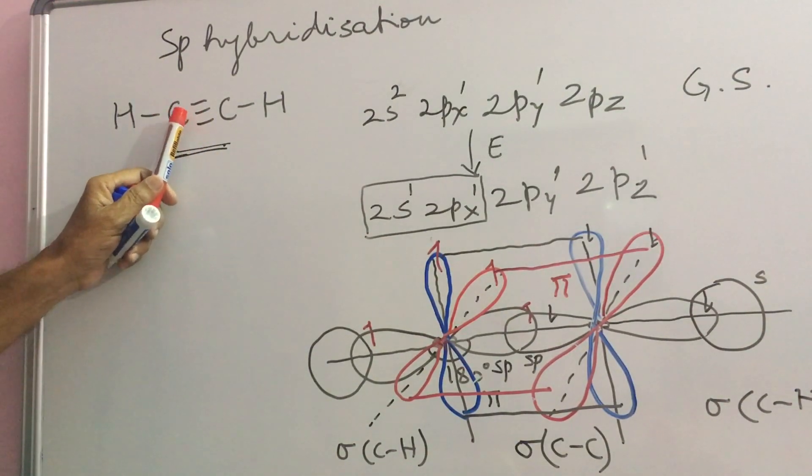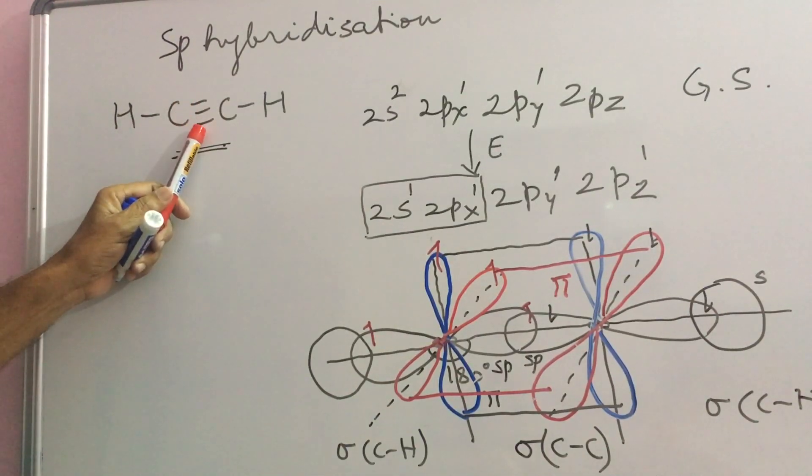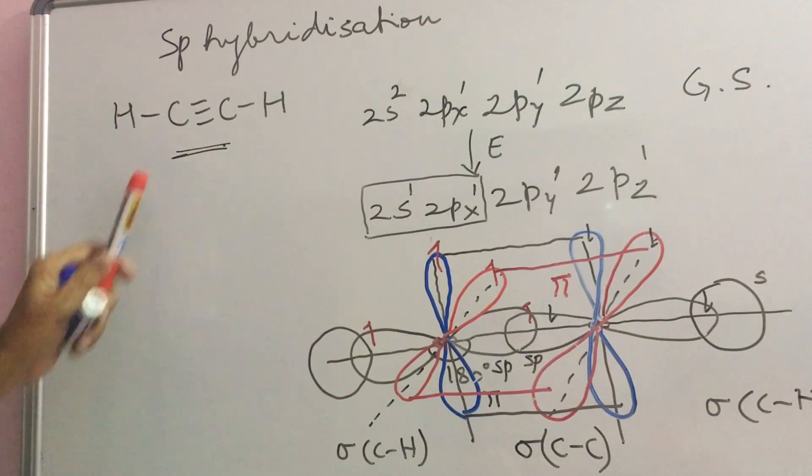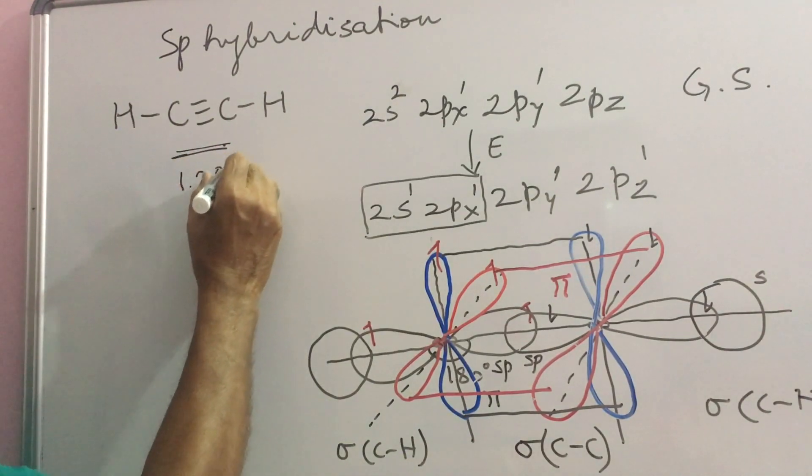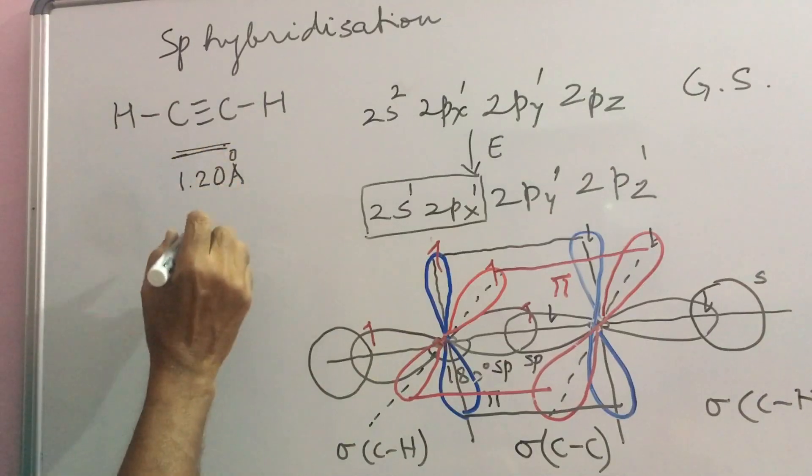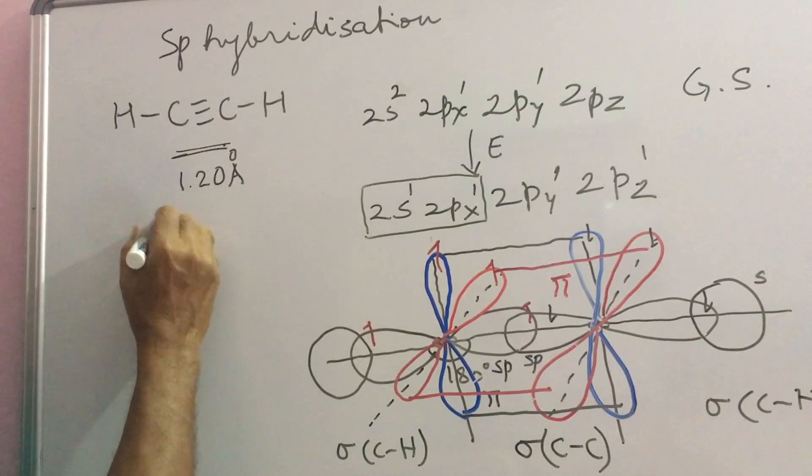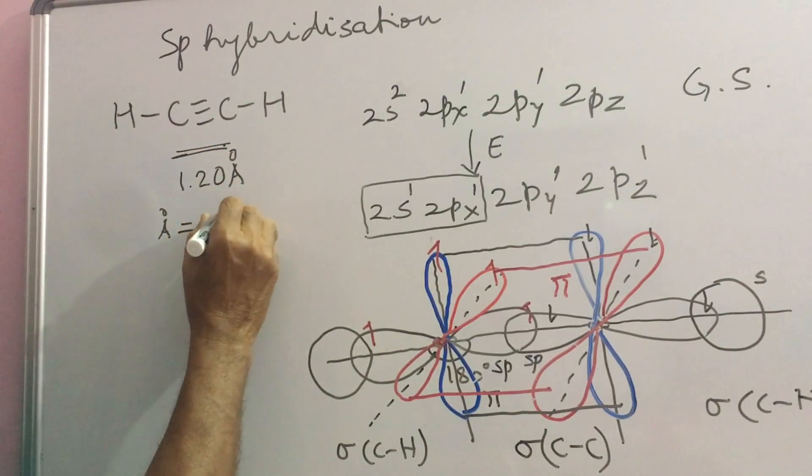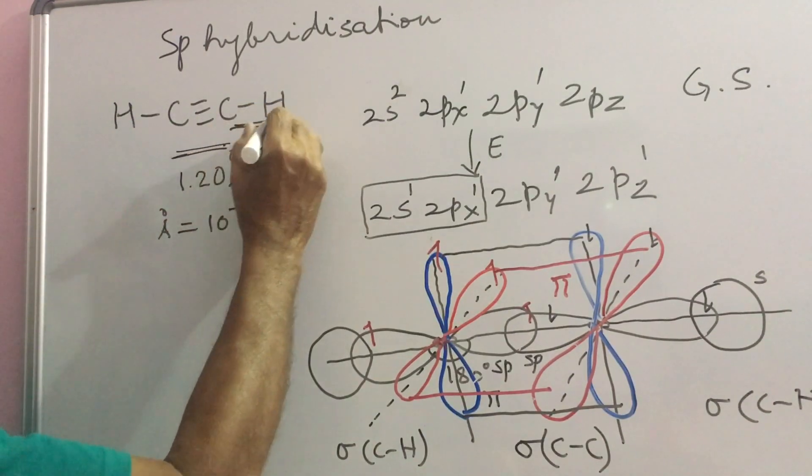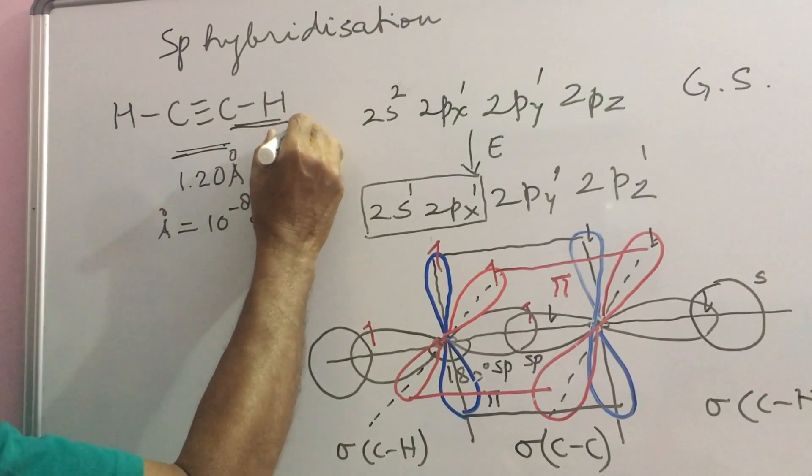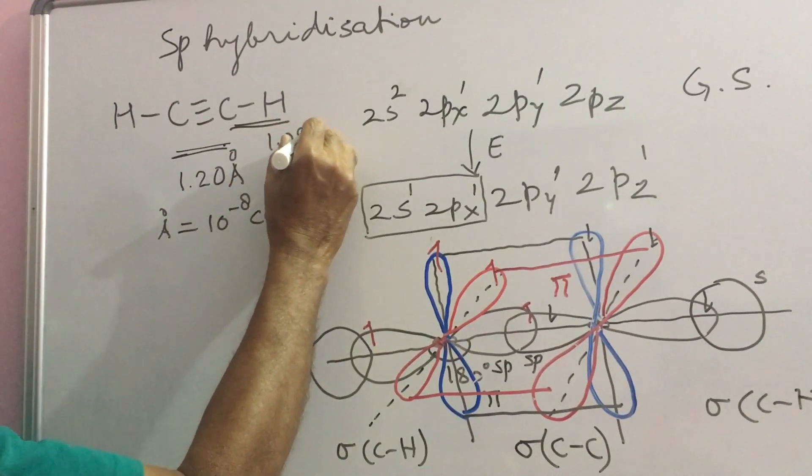Of these three lines, one represents sigma and these two Pi, total six electrons. This bond length here is 1.20 Angstrom units. One Angstrom unit is 10 to the power minus 8 centimeter and this sigma-CH bond is 1.08 Angstrom units.